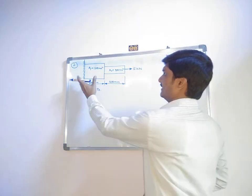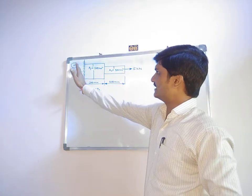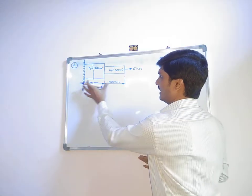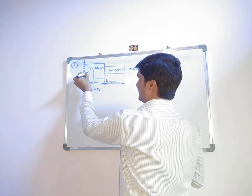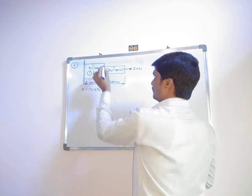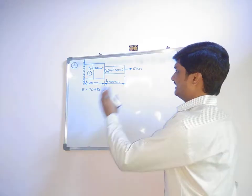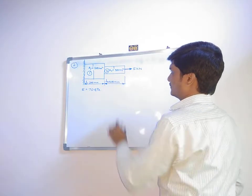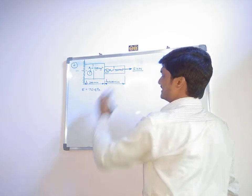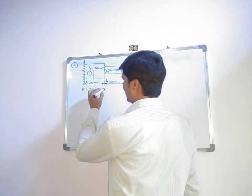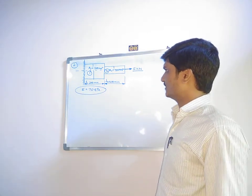The question is based on a bar element. There is a stepped bar having a different cross-sectional area for both sections. One end is fixed and the other end is free. The lengths of both elements are different: L1 and L2, with section one and section two having different cross-sectional areas. A load of 5 kilo-newtons is applied at the free end along the axis — an axial tensile load. The value of E (modulus of elasticity, or Young's modulus) is given.